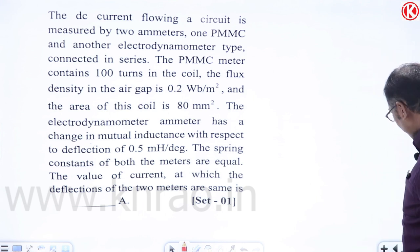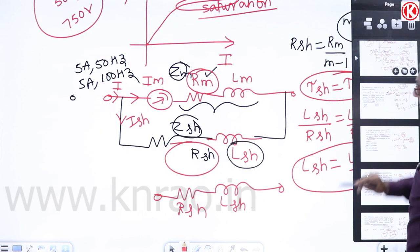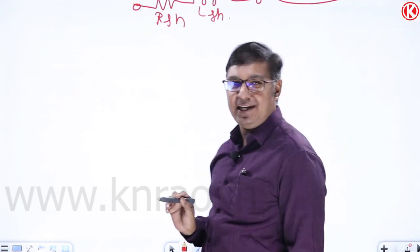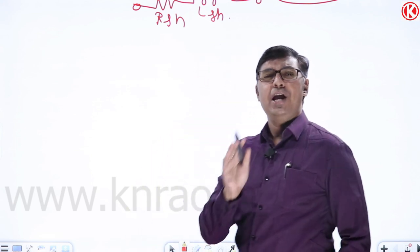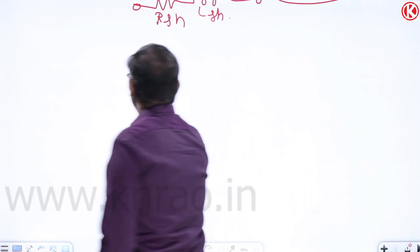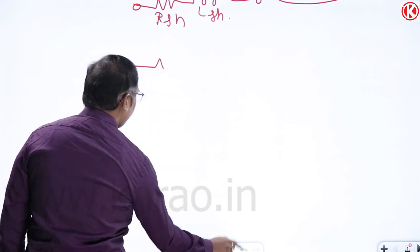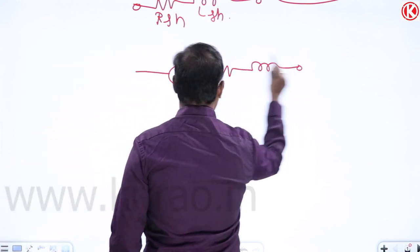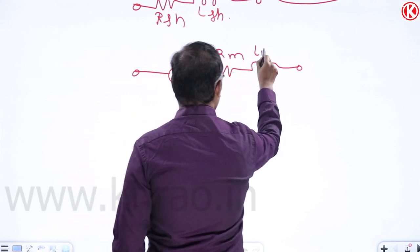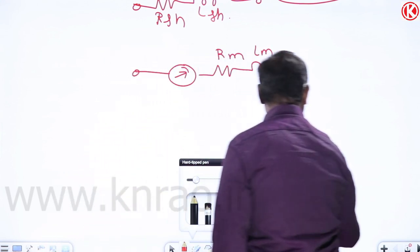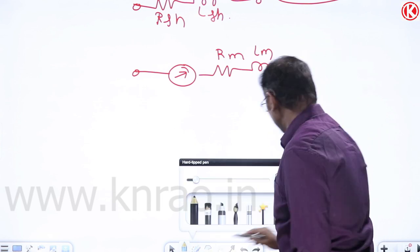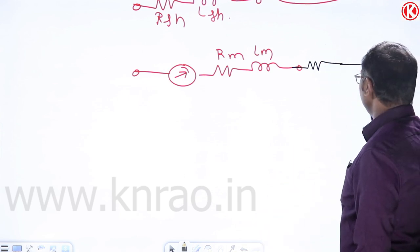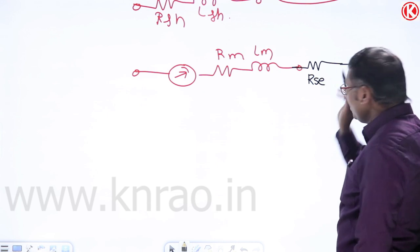Now for MI voltmeter design. The basic MI instrument (Rm, Lm) can have its range extended by connecting a series resistance. However, this design has a frequency problem — with a reactive element present, if frequency changes, reactance changes, impedance changes, and the indication changes for the same applied voltage.